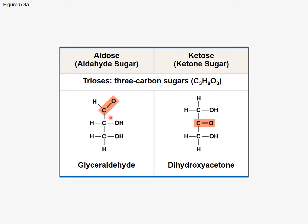Three-carbon sugars have three carbons in their backbone. Three-carbon sugars have a general molecular formula of C₃H₆O₃. If you divide all those numbers by three, you get one carbon, two hydrogen, and one oxygen. The one on the left is called an aldose sugar because it has an aldehyde group. This one happens to be called glyceraldehyde, and it will be very important later when we talk about cellular respiration and photosynthesis.